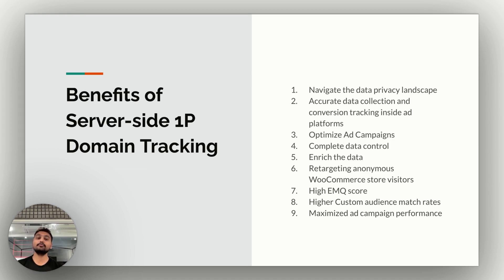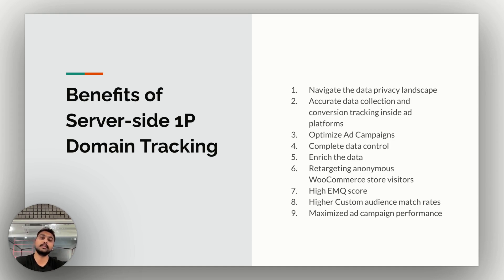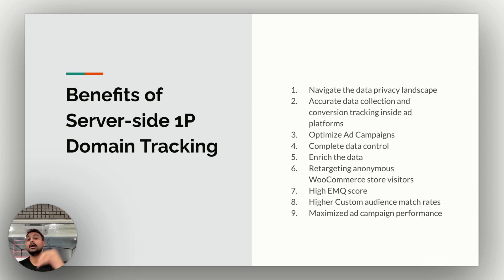The seventh benefit is that server-side tracking helps you collect event data with a lot of signals. These signals help ad platforms match events with users, giving you a higher Event Match Quality (EMQ) score, especially on Meta Ads. The eighth benefit is higher custom audience match rates. Server-side tracking with 1P domain combined with Customer Labs helps you accumulate user data over time — 60, 90, or 180 days. When this entire audience segment is synced to ad platforms like Meta Ads, Google Ads, and TikTok, you see higher custom audience match rates for both anonymous and known users.